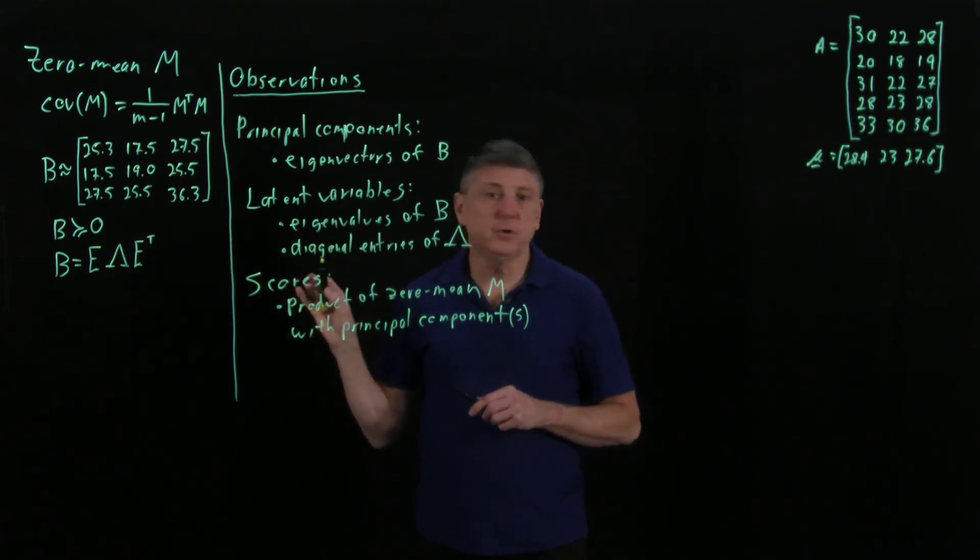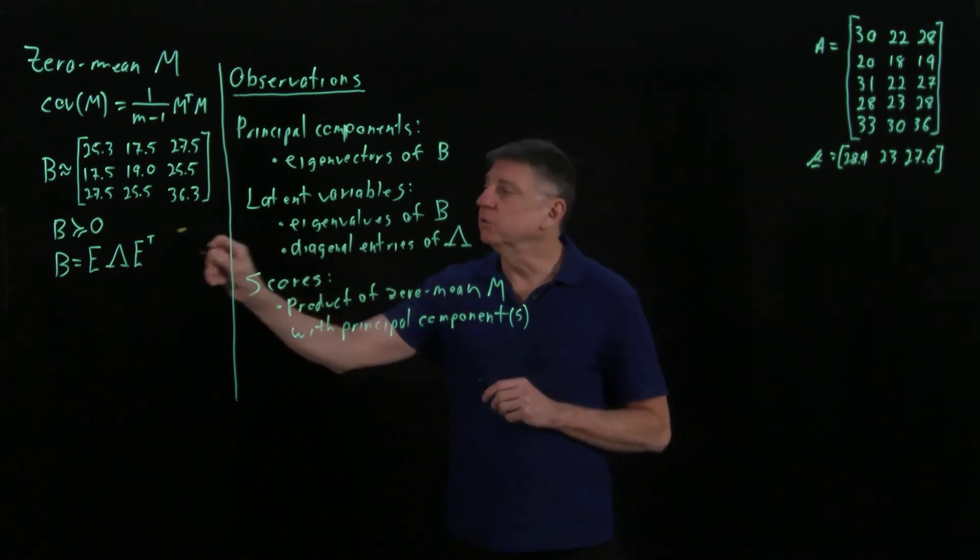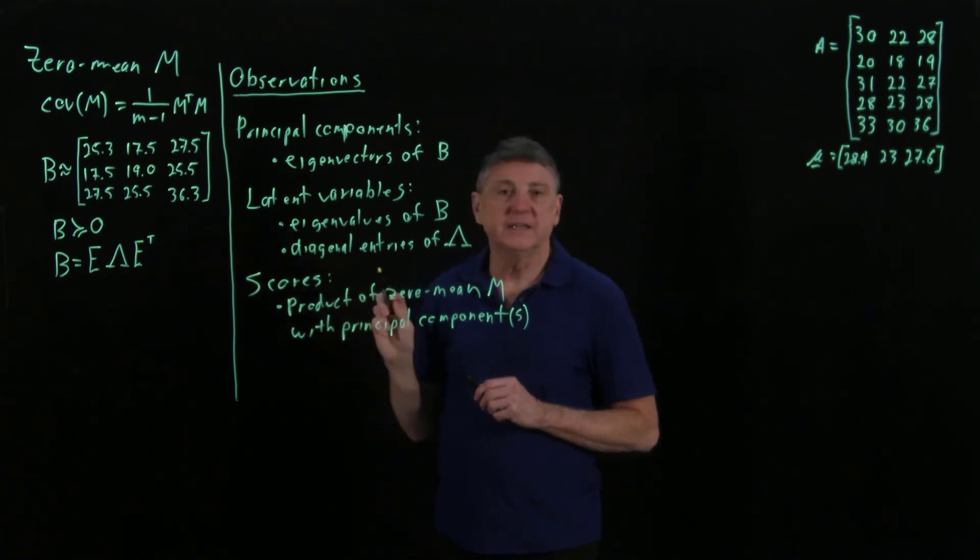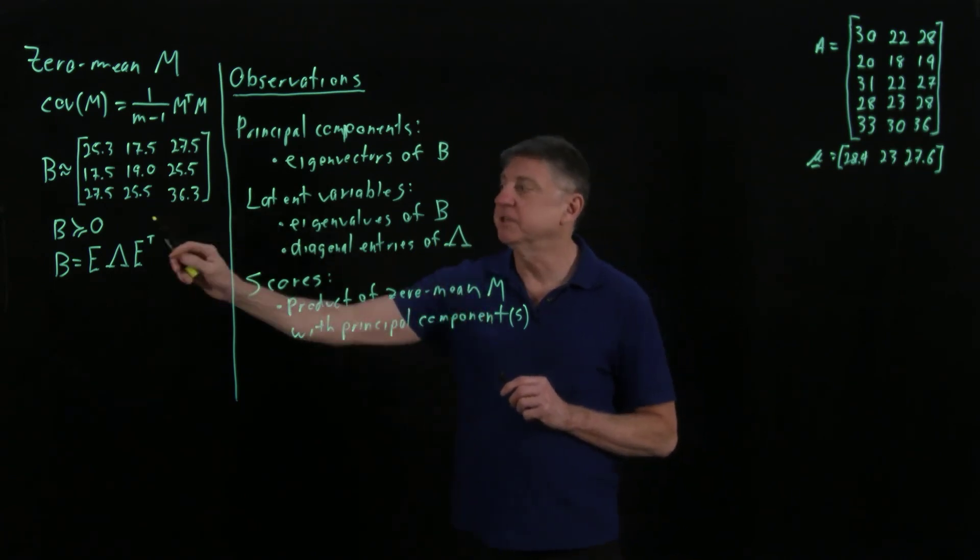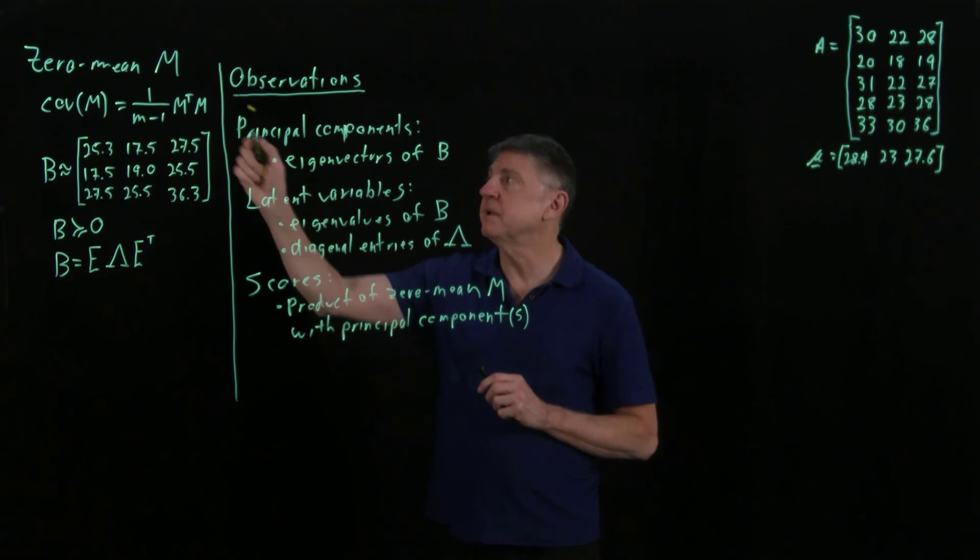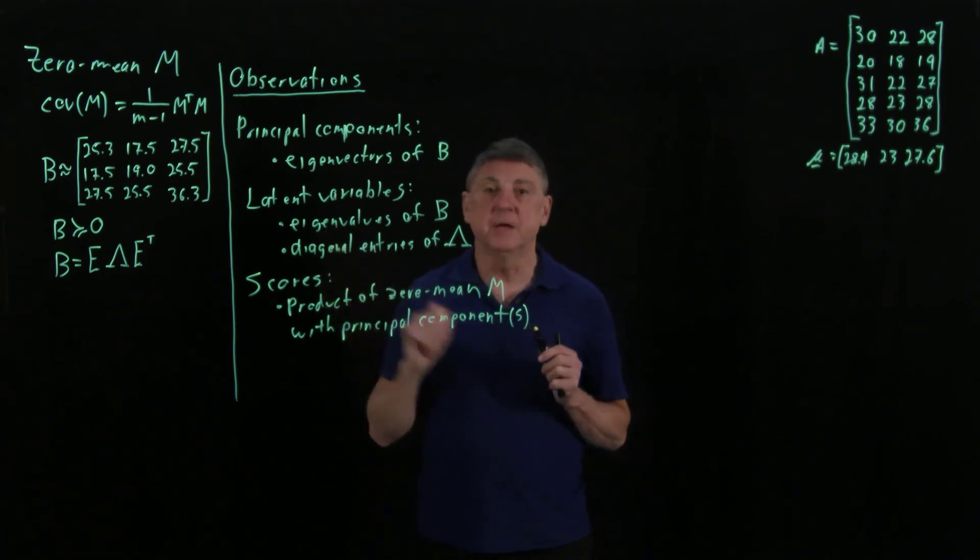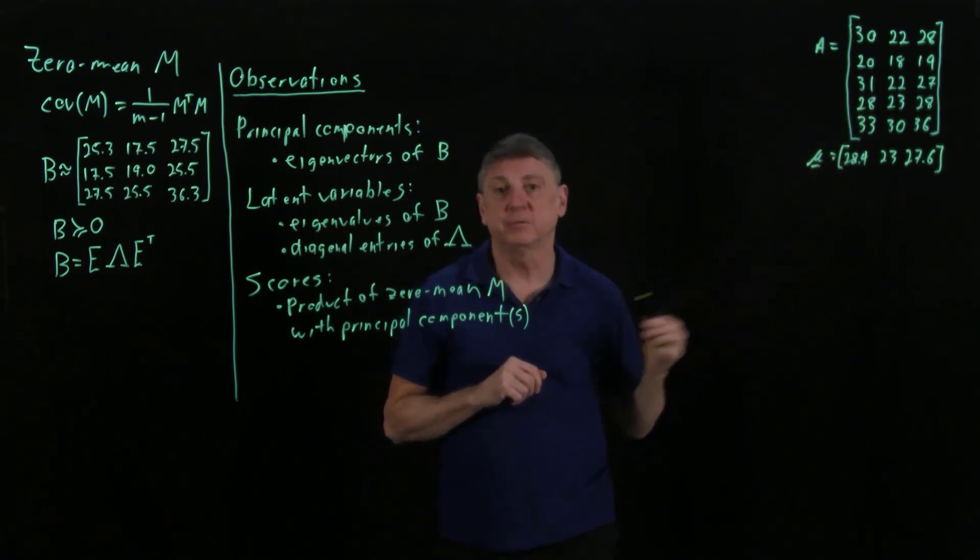If you go back to the session where we represent a matrix as a sum, you'll see that the first eigenvector, associated with the largest eigenvalue, is the best rank one approximation to the covariance matrix. That means it's the best one-dimensional approximation to the column space of M, and that's closely related to a one-dimensional approximation of the column space of the original data.